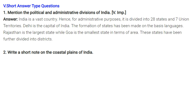Mention the political and administrative divisions of India. India is a vast country, so for administrative purposes it is divided into 29 states — including the newly added Telangana — and seven union territories. Delhi is the national capital of India. The formation of states has been made on the basis of languages. Rajasthan is the largest state.